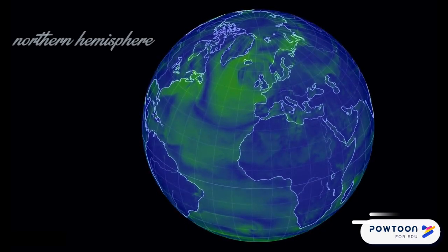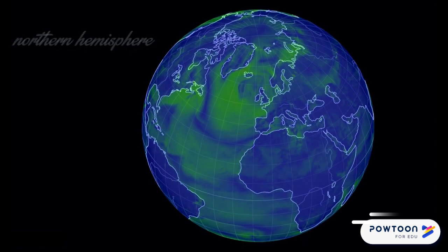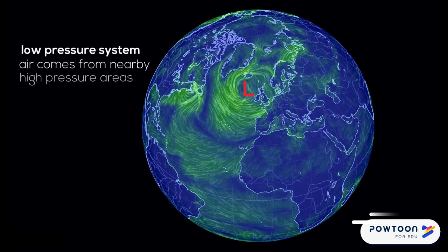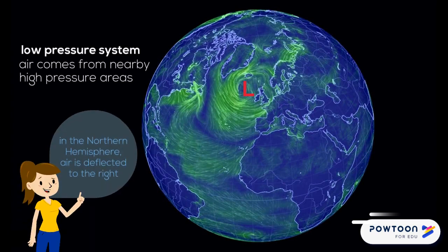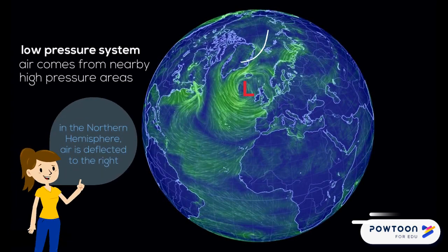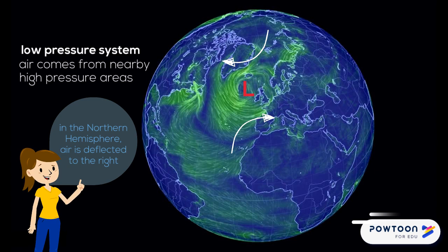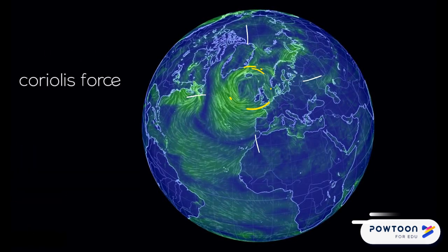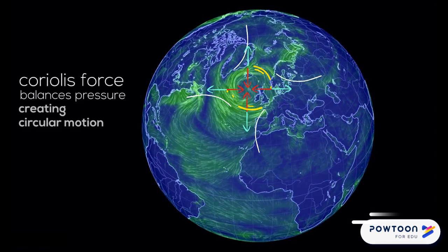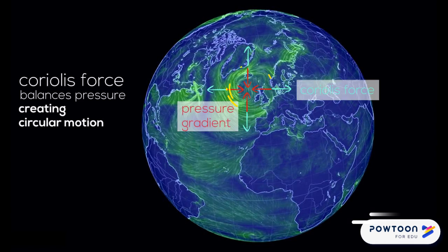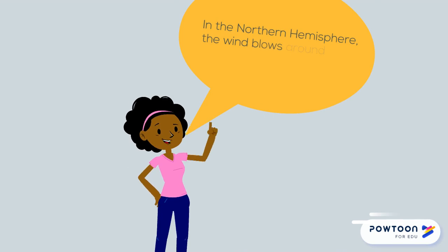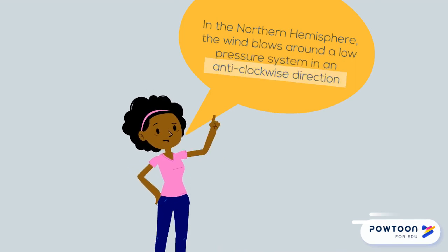Think of a low pressure area in the northern hemisphere. The pressure gradient pulls air in from the surrounding higher pressure areas. Air coming into it from the north is deflected to the right, to the west. Air coming in from the south is also deflected to the right, to the east. Eventually, the Coriolis force balances the pressure gradient and you end up with circular motion. In the northern hemisphere, the wind blows around a low pressure system in an anti-clockwise direction.